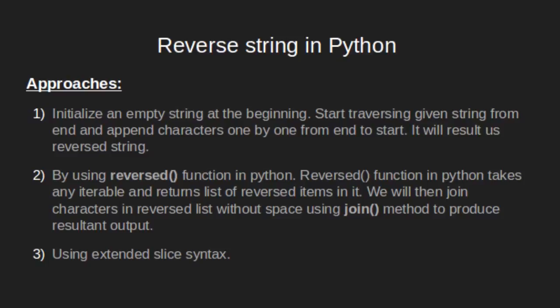The second approach uses the reversed() inbuilt function in Python. Reversed() is a built-in function that accepts any iterable and returns a list of items in reversed order. To reverse a string using this function, we pass our input string into reversed(), which returns a list of characters. After that, we join all these characters without a space using the join() function to produce the resultant reversed string.